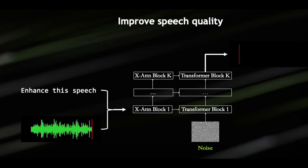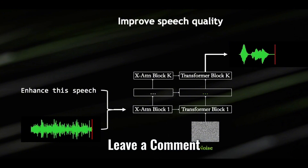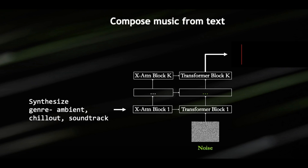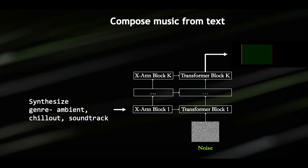This one might be my personal favorite feature, at least up till now. But of course that's not all. We've already talked about speech generation with Fugato that only requires a text prompt, but it can even generate a new sound entirely based on text prompts. Like if you want a music sample, take a look at this clip of the audio Fugato generates for a chill-out track.